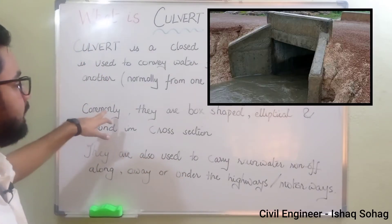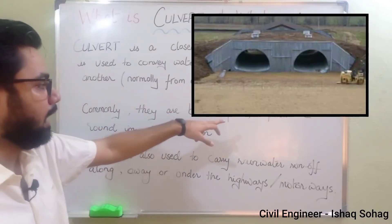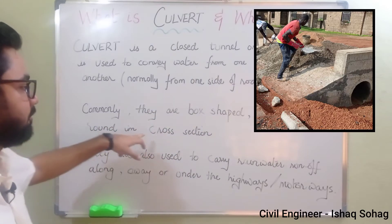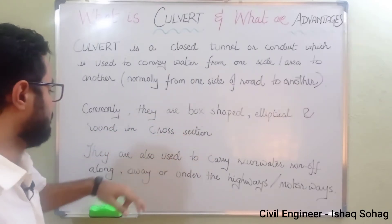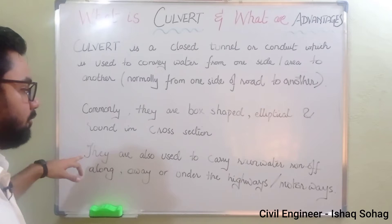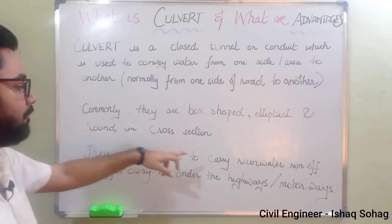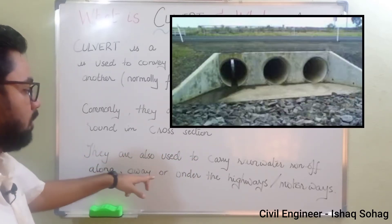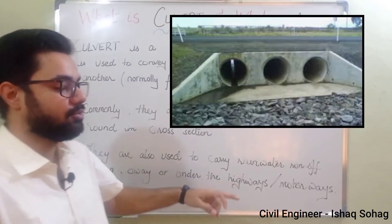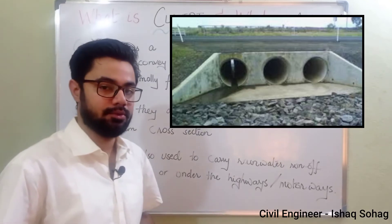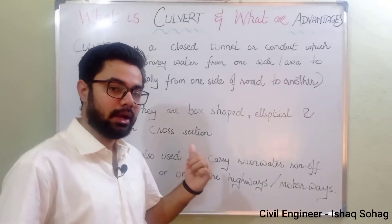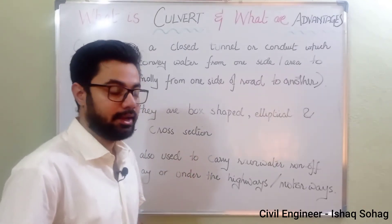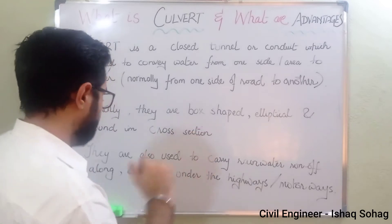Commonly, culverts are box-shaped, elliptical, and round in cross section. They are also used to carry rainwater runoff along or under highways or motorways. Now let me give you the details of the design and shape.